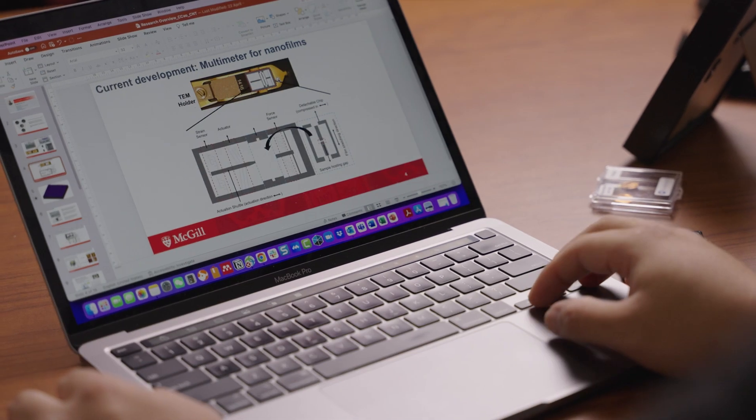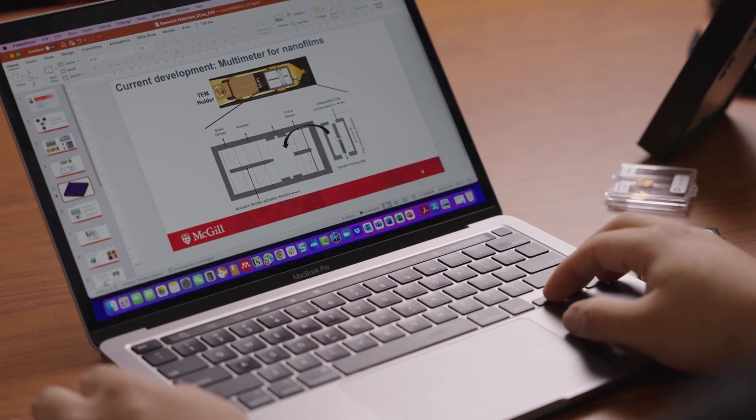The name of our project is called Multimeter of the Nano-Age. Everybody knows what a multimeter is, right? You measure the voltage, the current, and all these kinds of properties of materials. What we're doing is trying to make the same kind of device but for nanomaterials.